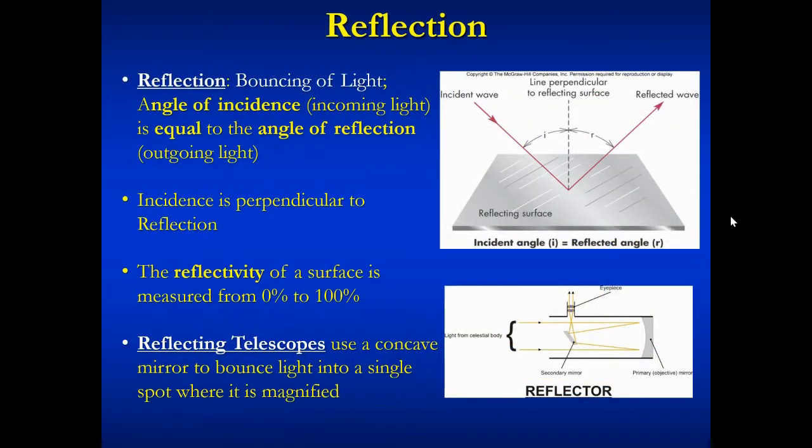We also use the principle of reflection in telescopes. This is the bouncing of light. And the incoming light, they call that the angle of incidence. When it hits the reflective surface, it bounces off in an exactly perpendicular direction. And that's called the angle of reflection. And they're equal to one another. We all know this instinctively. When we look at ourselves in a mirror, we have to get completely perpendicular with the mirror in order to see our image. So we know this instinctively, but this is kind of the definition of it. The angle of incidence is perpendicular to the angle of reflection. And surfaces can be more or less reflective. The reflectivity can go anywhere from zero to 100%.